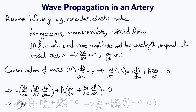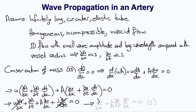Expanding using the chain rule and applying our linearizing assumptions — that wave amplitude is small and wavelength is long — we obtain the simplified conservation of mass: del u/del x plus (1/A)(del A/del p)(del p/del t) equals zero. The term (1/A)(del A/del p) is a property of the elasticity of the vessel. We call this equation one.